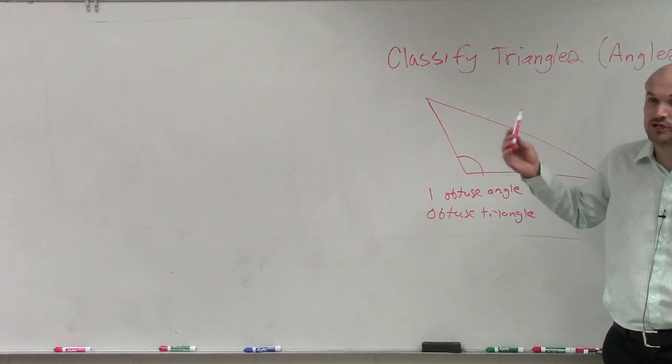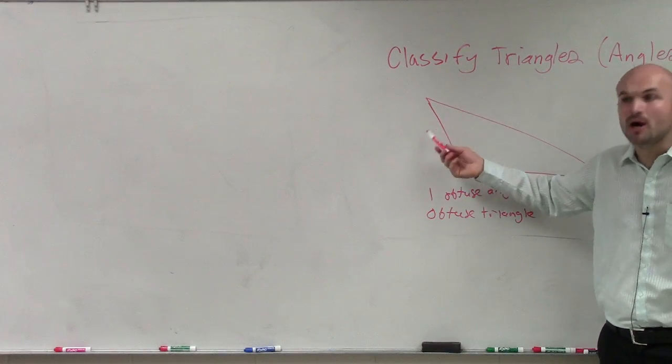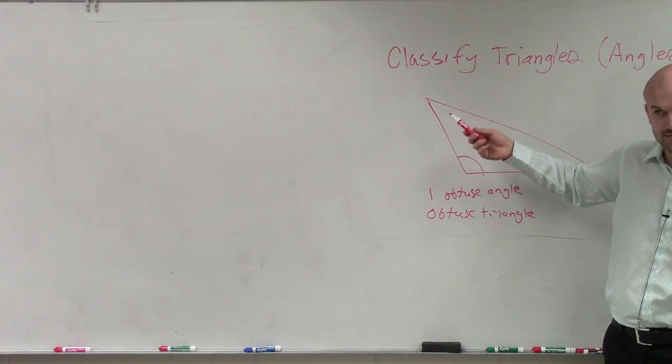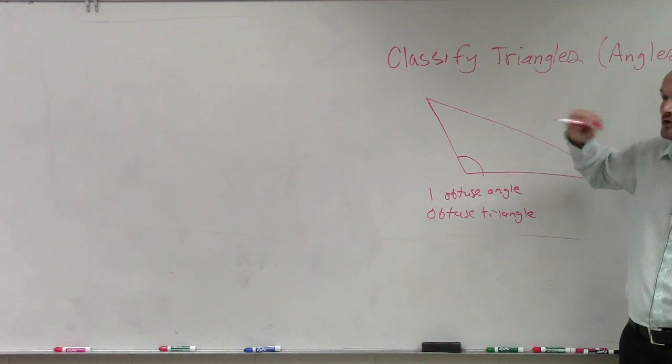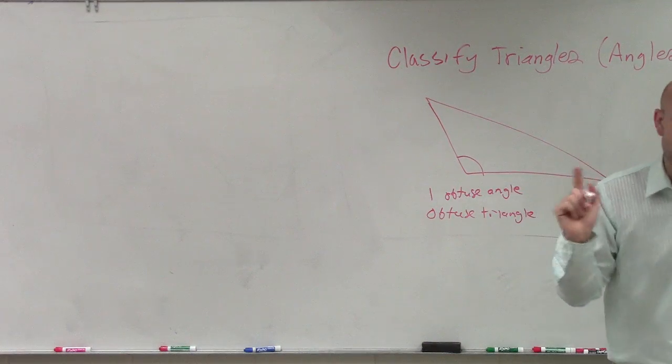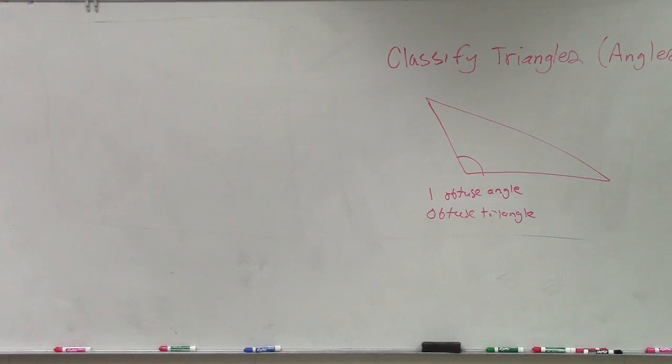180. So already, with two acute angles, you already are above 90 degrees, right? So therefore, an obtuse triangle can only contain one obtuse angle. But when it does, we call it an obtuse triangle, OK?